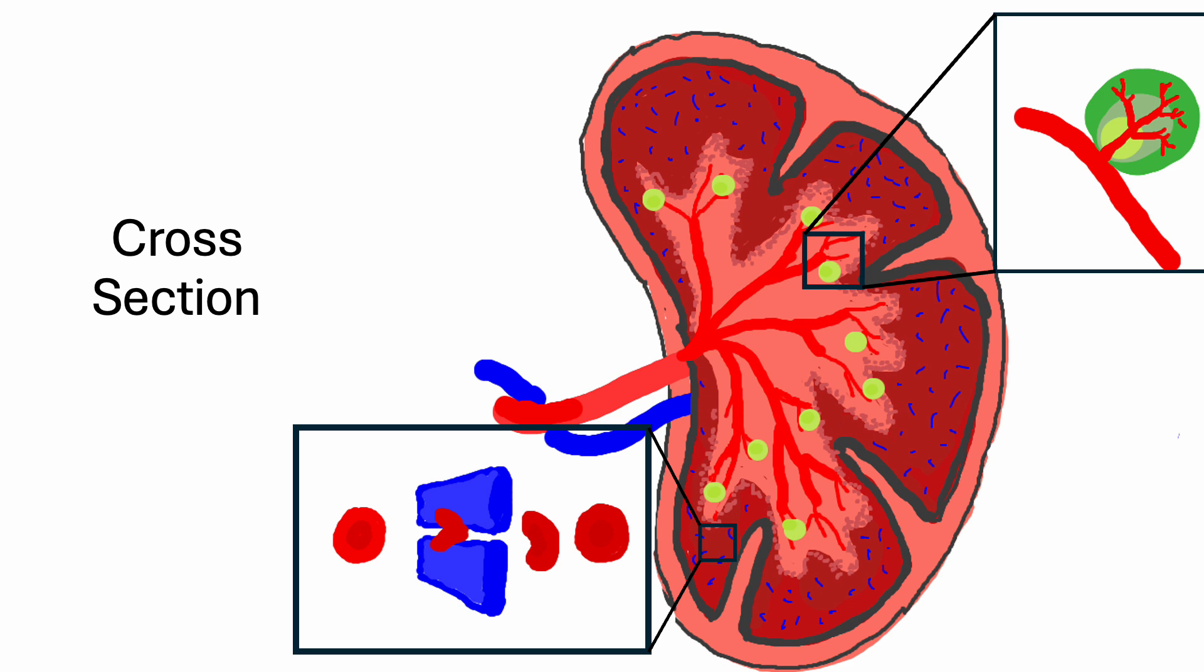Here is a cross-section of the spleen. It is divided into red pulp and white pulp.